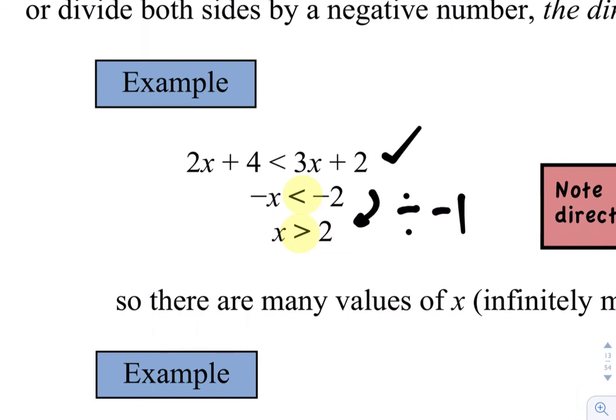So if I put something like 3 in there I get 2 times 3, 6 plus 4, 10 on the left hand side and on the right hand side if I put 3 in there I get 3 times 3 is 9 plus 2 is 11. So 10 is less than 11. Yep that works. In fact any x values bigger than 2 will make that inequality work. So there's infinitely many values of x that makes this inequality work.